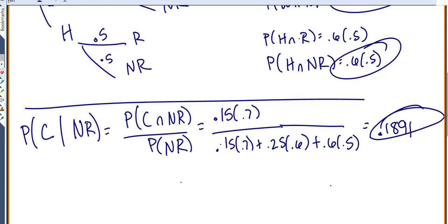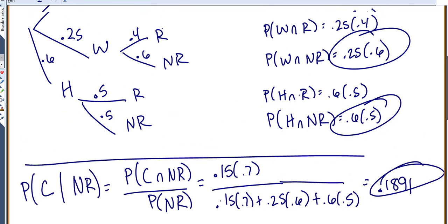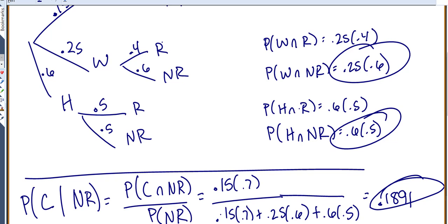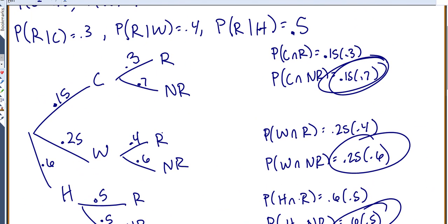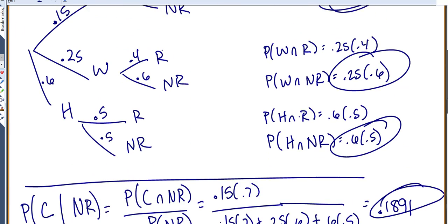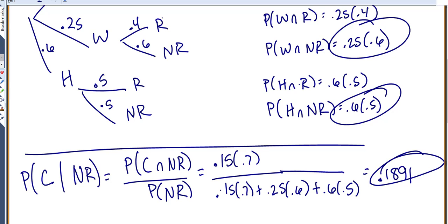So again, I do the tree diagram instead of just trying to plug it into formulas like the book does. They're also trying to skip steps and use the complement rules inside of all their calculations, and that just gets much more difficult for me. So anytime you see something that looks like it's in two stages, so first it's cold, warm, or hot, and then it's raining or not raining, draw out a tree diagram, find the probabilities for all of your intersections, and then figure out what you need.